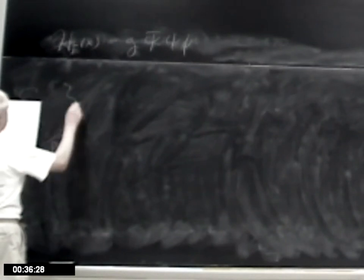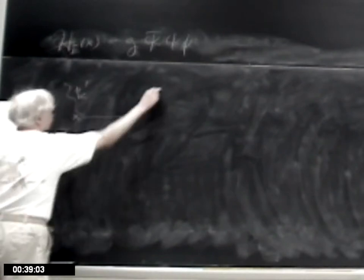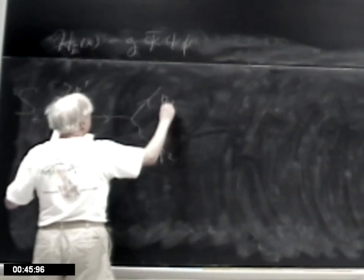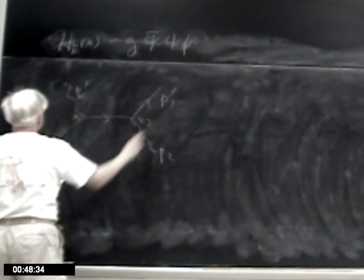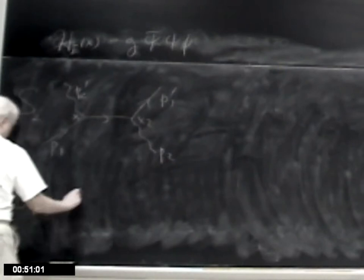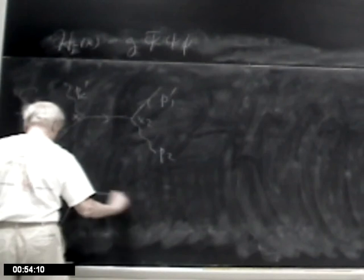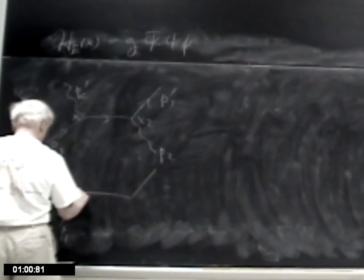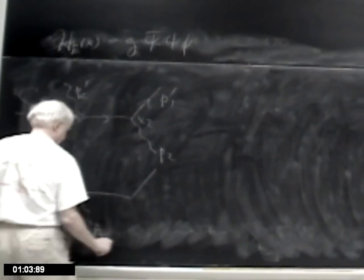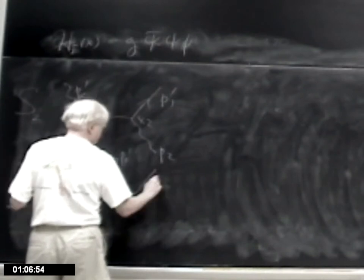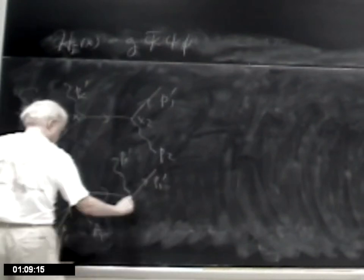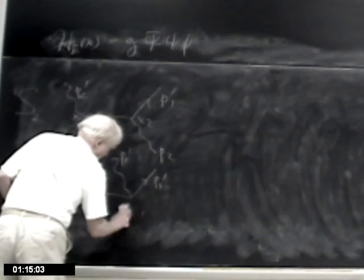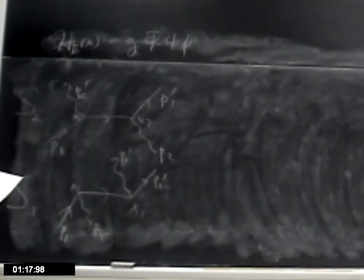The diagram S2 has external momenta p1, x1, p2 prime, p2, p1 prime, x2. And S1 had p1, x2, p2, p2 prime, p1 prime. So these are how we wrote these Feynman diagrams.